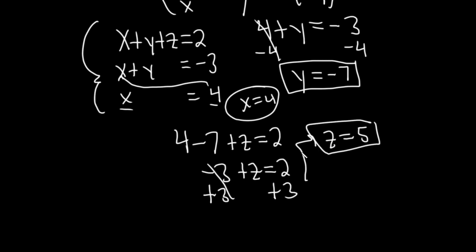That gives us z equals 5. So we have x, y, and z. So 4, negative 7, and 5. And those would be the answers.